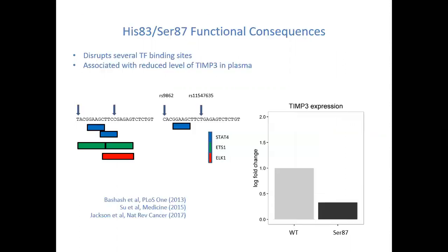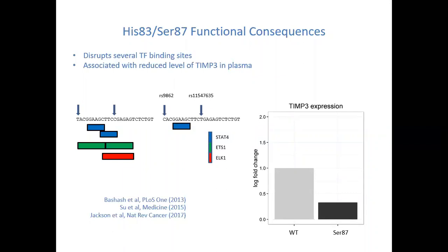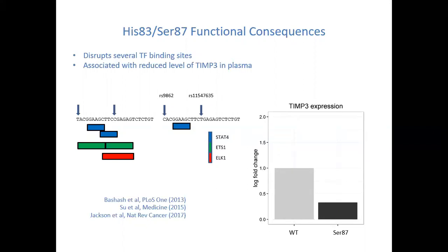We determined that the significant SNPs were two linked SNPs in TMP3 — histidine 83 and serine 87. These are functional SNPs found at fairly high frequency in the general population and not associated with disease in isolation, meaning they are polymorphic and not disease-associated in euploid individuals. However, it has been shown that they disrupt several transcription factor binding sites and are associated with reduced levels of TMP3 in plasma, lowering its expression. We also showed that these SNPs act independently but synergistically to reduce function.